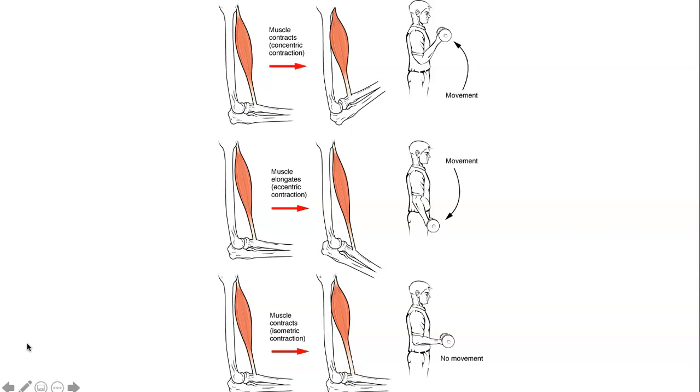The second type of contraction is isometric contraction, and that occurs as the muscle produces tension but the angle of the skeletal joint does not change.